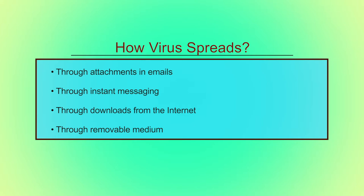A virus can copy itself and infect a computer without the permission or knowledge of the user. However, a virus cannot spread without human action — if you have received a file that is infected but you have not opened it, the virus will not spread in your system. Viruses can also be spread through removable media like floppy disks, pen drives, hard drives, CDs, and USB drives.